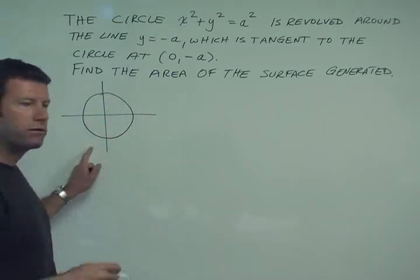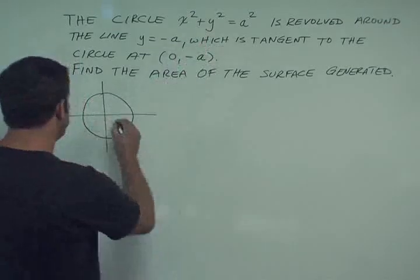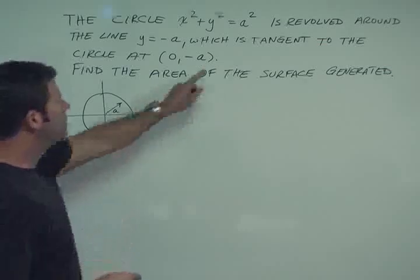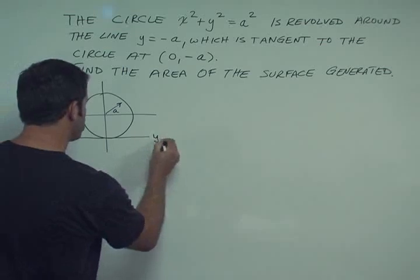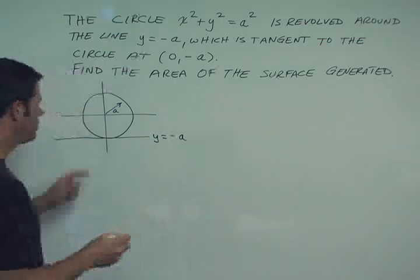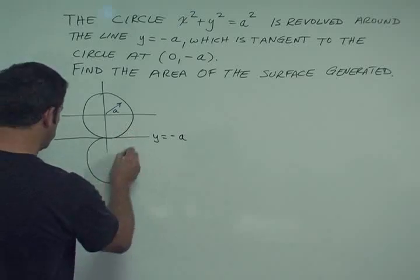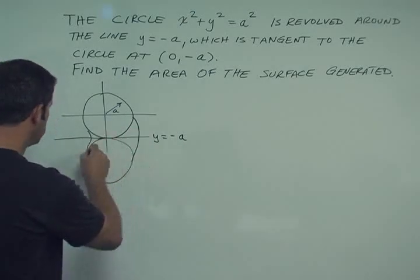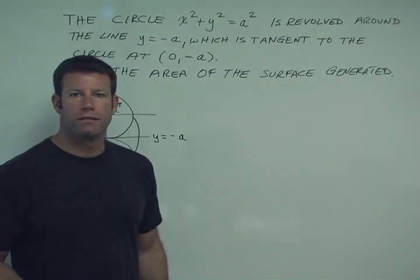So this is a circle. Since our circle is centered at the origin, it has a radius of a. And the tangent line is y equals minus a, which is here. We're going to revolve this circle around this line, which gives us a parallel cross-sectional image. And essentially it gives us what looks like a donut with no hole in the center.